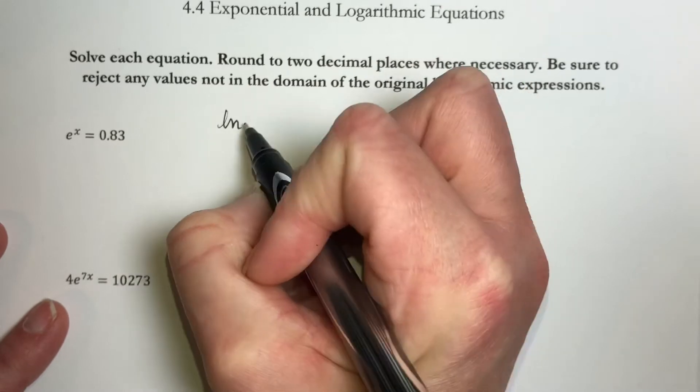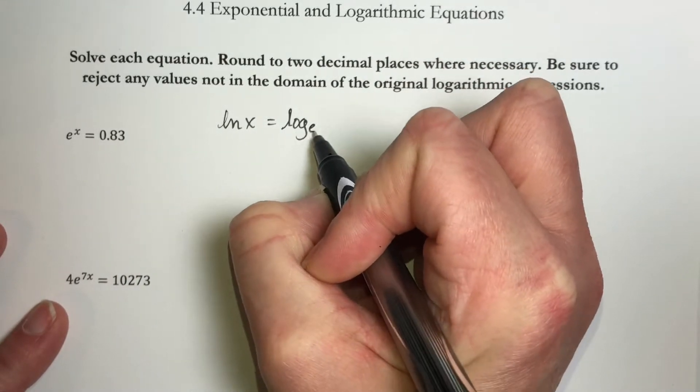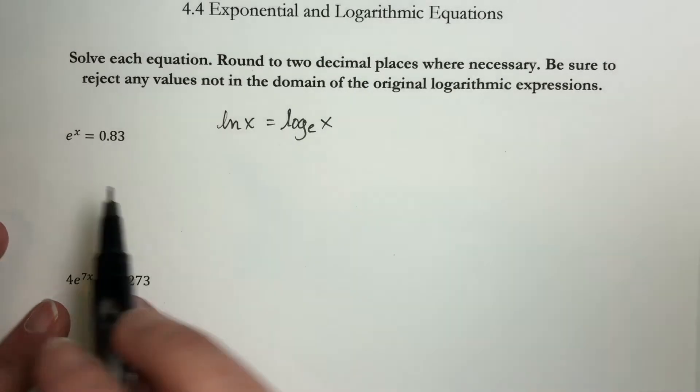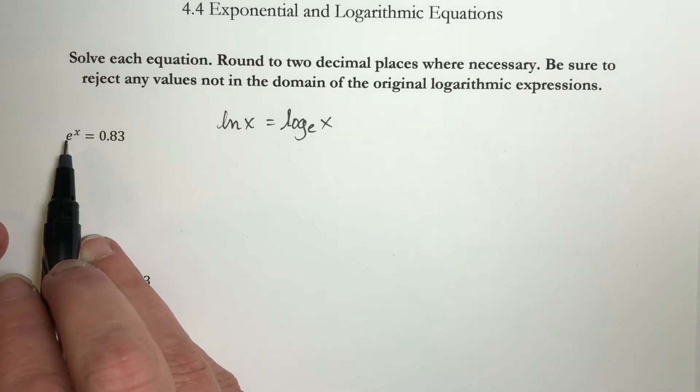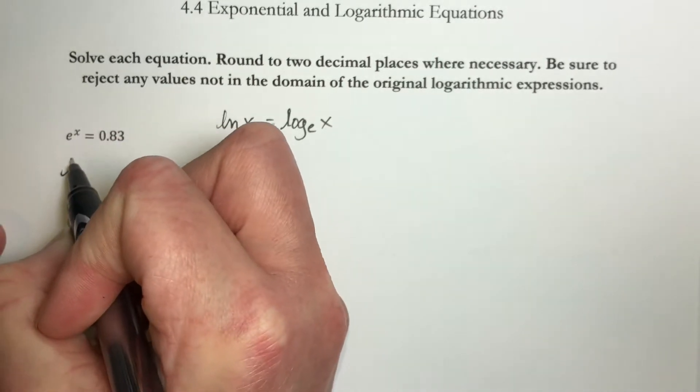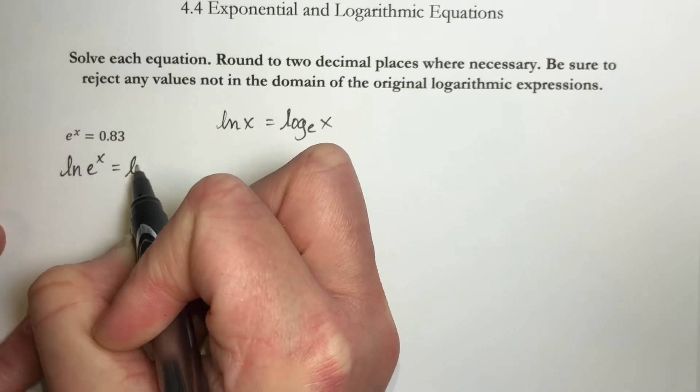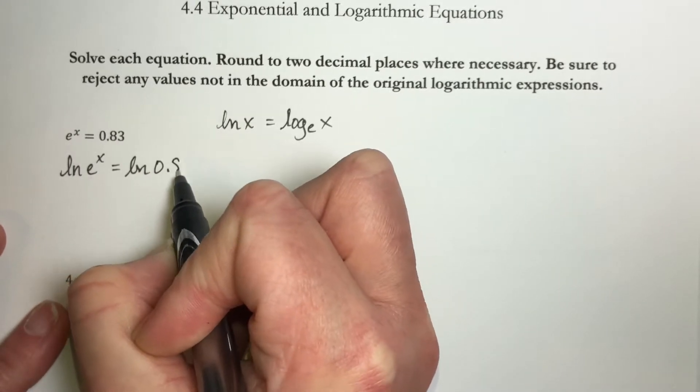Because remember that natural log of x means log base e of x. So to undo this base e in an exponential form, I'm going to take natural log, and I can do that of both sides. So natural log of e^x equals natural log of 0.83.